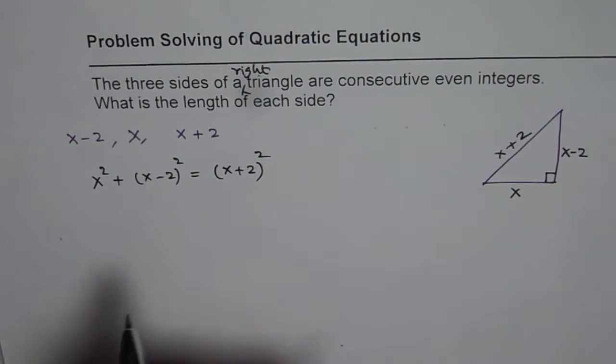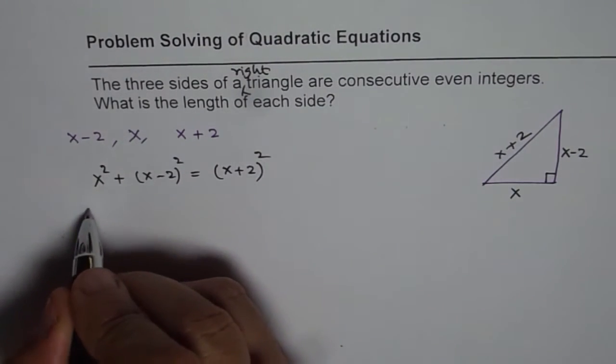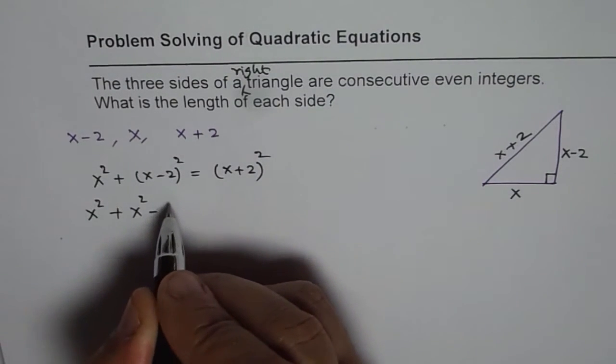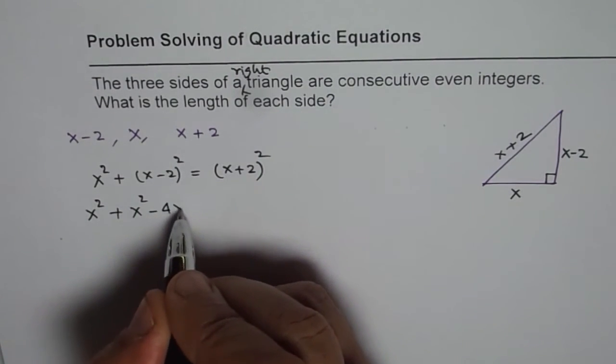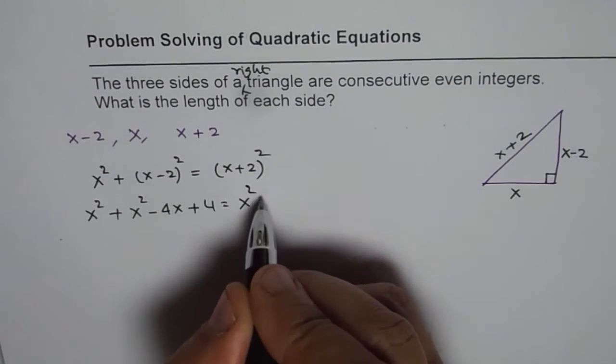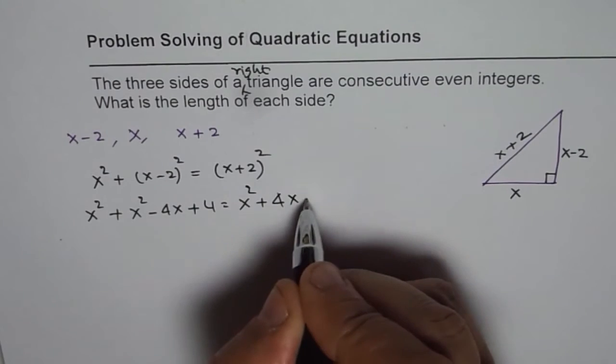Let's work out this problem. So let us expand this. We get x squared plus, when you expand this, we get x squared minus 2ab which is 4x, plus 2 squared which is 4. On the right side, we get x squared plus 4x plus 4.